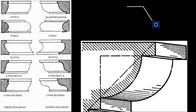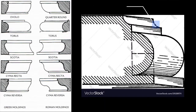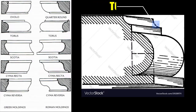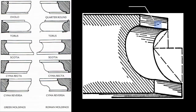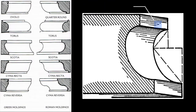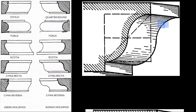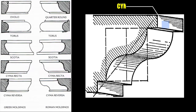Types of Greek moldings: Ovolo — egg and dart ornament. Torus — guilloche ornament. Scotia — concave molding with a cove outline. Cyma recta — anthemion ornament. Cyma reversa — water and leaf ornament.